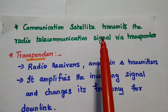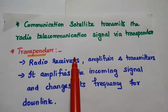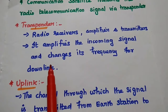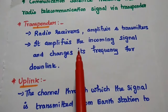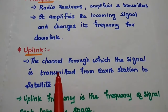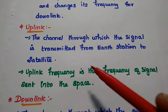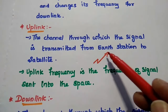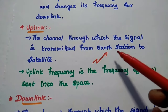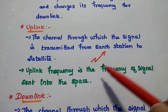The communication satellite transmits radio telecommunication signals via a transponder between earth stations. The transponder consists of radio receivers, transmitters, and amplifiers. It amplifies the incoming signal and changes its frequency for the downlink. The uplink is the channel through which the signal is transmitted from earth station to satellite, and the uplink frequency is the frequency of the signal sent into space — that is, the frequency of the transmitted signal from earth station to space.